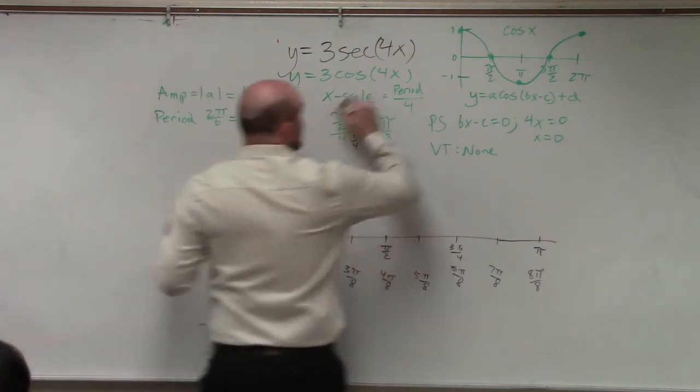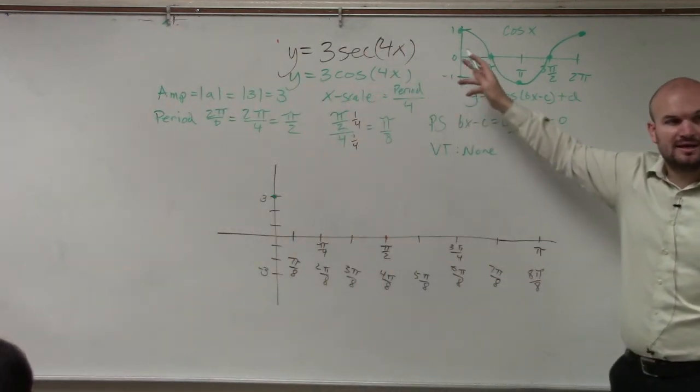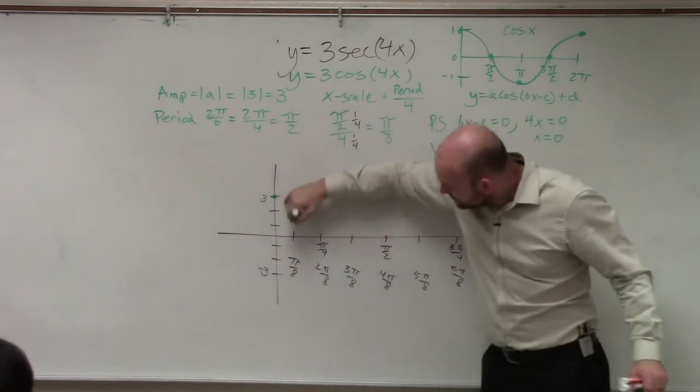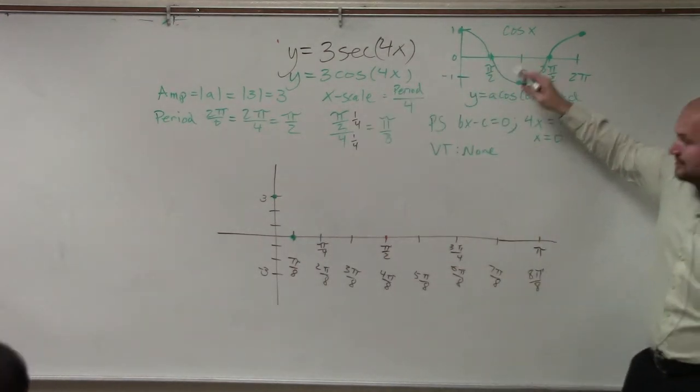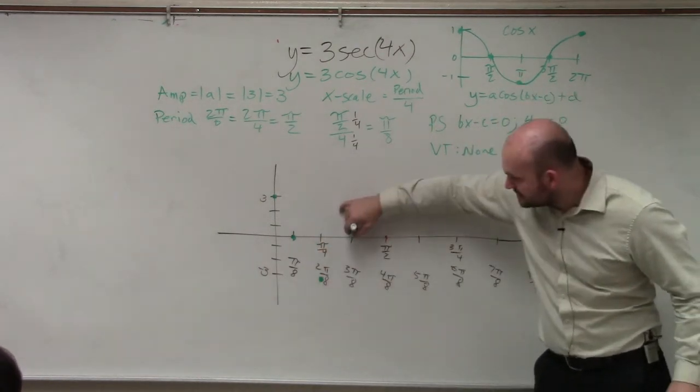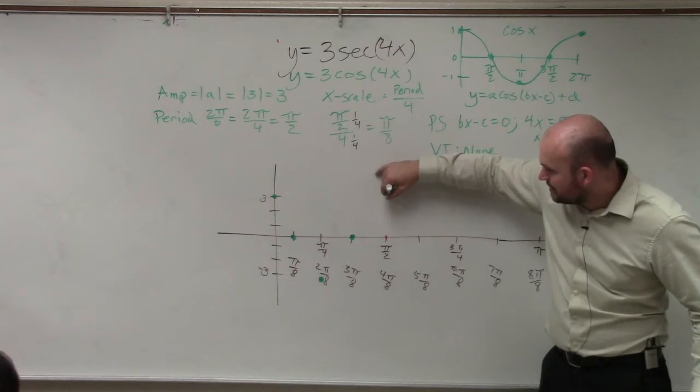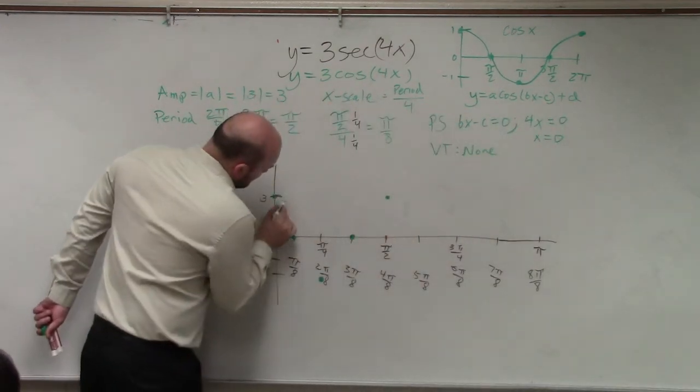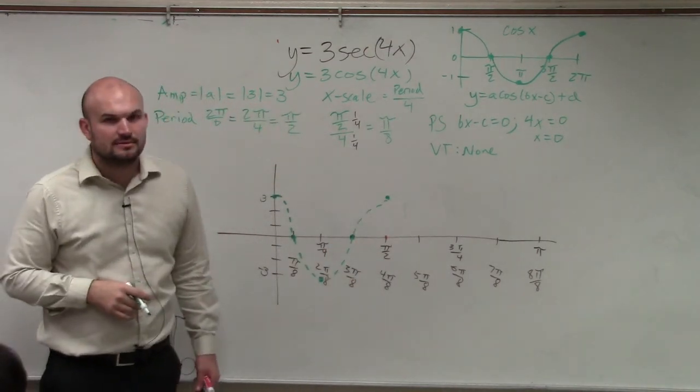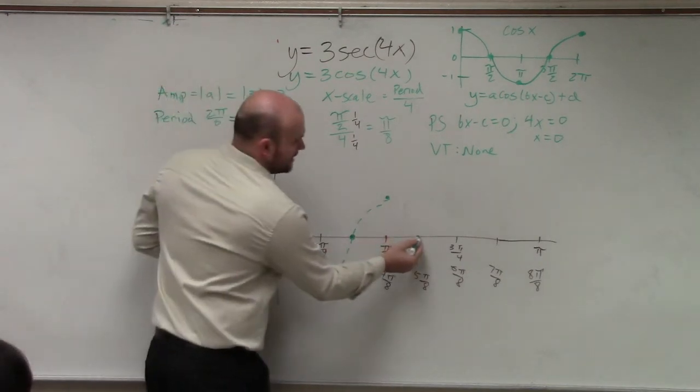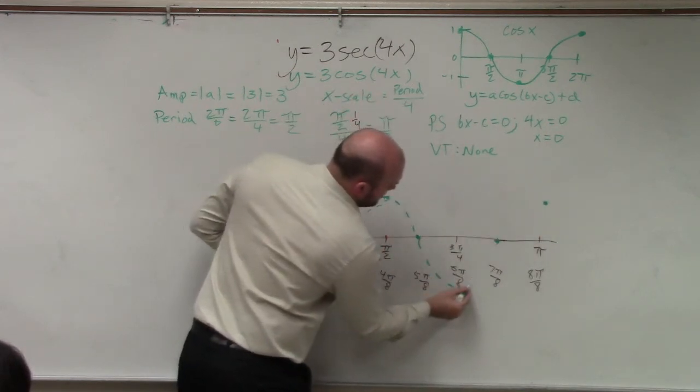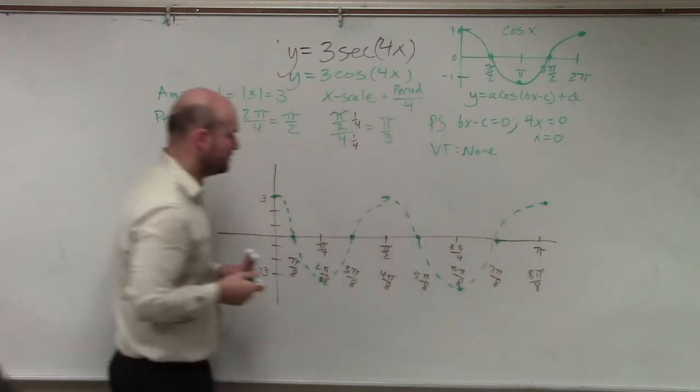Then what happens at the next x scale? The next x scale is a what? The x intercept. Then at the next x scale is what? The minimum. Then at the next x scale is the intercept. The next x scale is a maximum. Does everybody see how I graph that? Could I continue? Intercept, minimum, intercept, maximum. Does everybody agree with me?